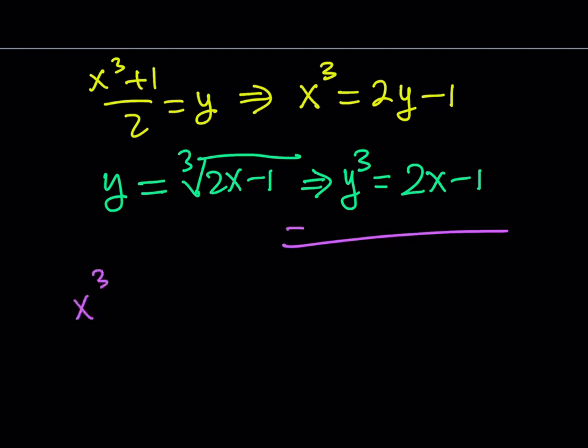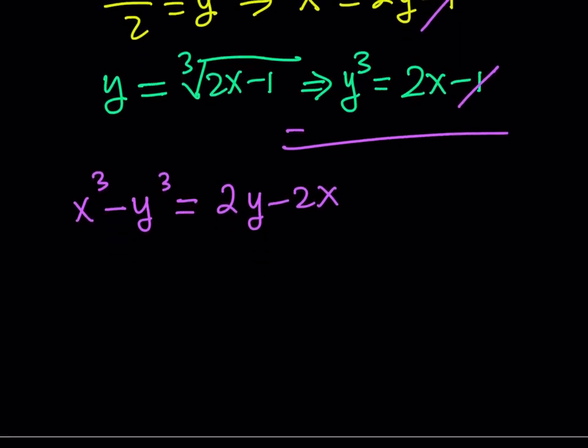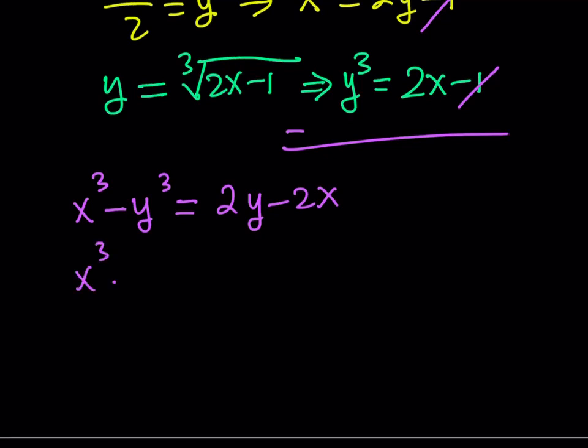So I'll subtract the left hand side. That's going to be x cubed minus y cubed. And the right hand side, notice that when you subtract, the negative one is going to cancel out because negative one minus negative one equals zero. And 2y minus 2x is what you're going to get from there. I'd like to put everything on the same side because that will give me a nice equation with zero on the right hand side. And also, it's going to make factoring easier.